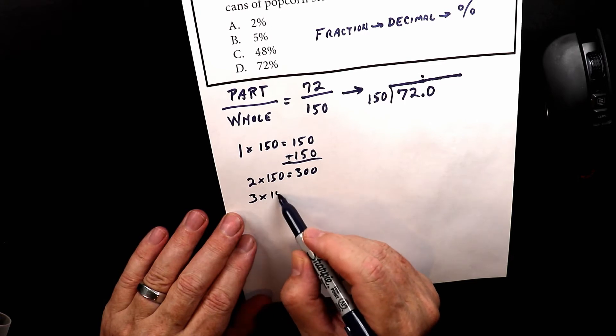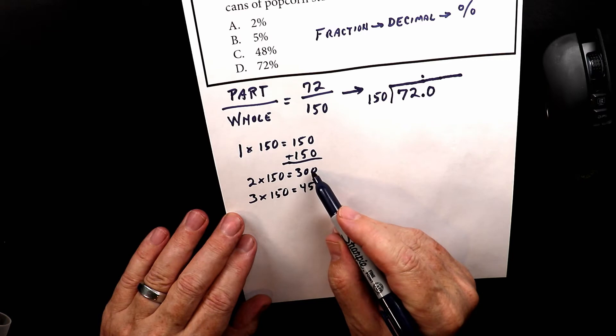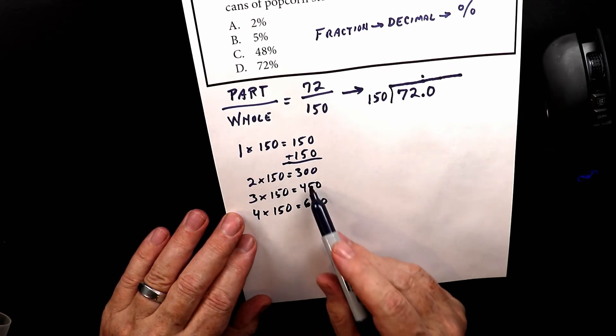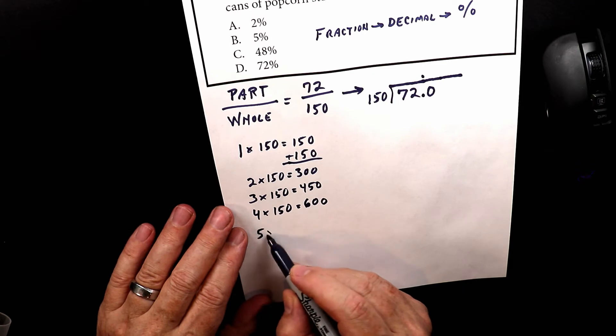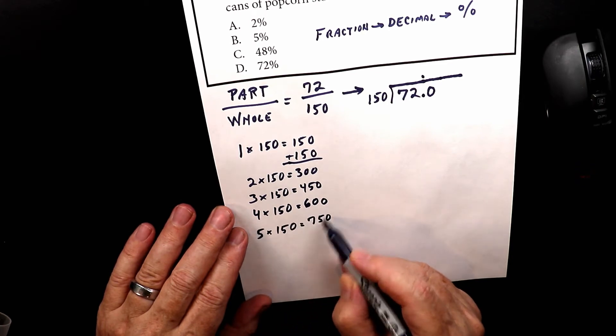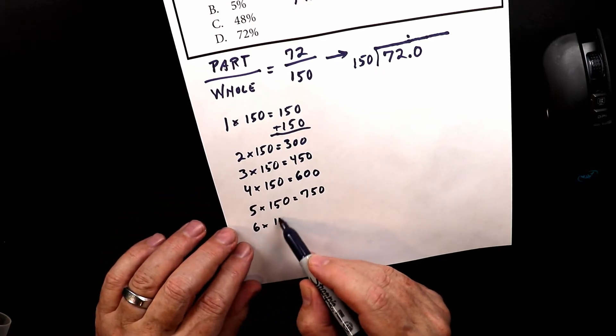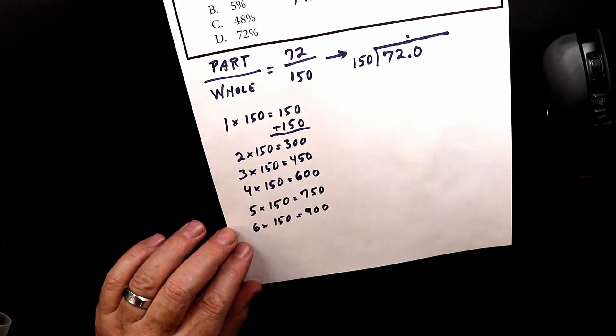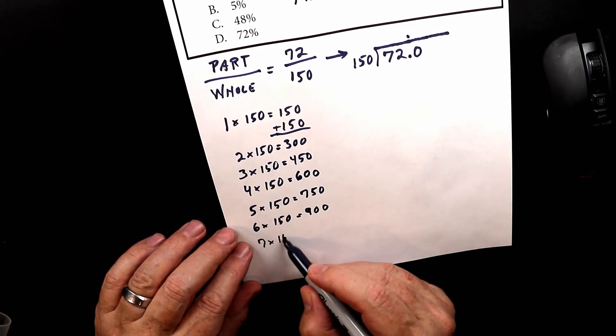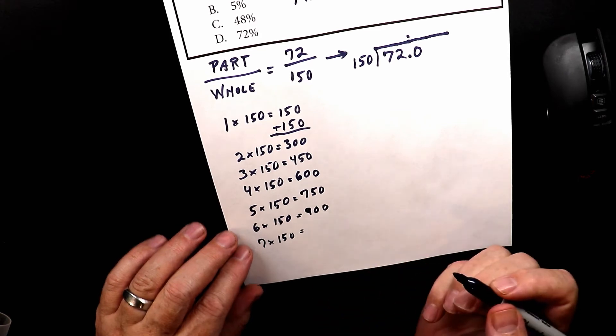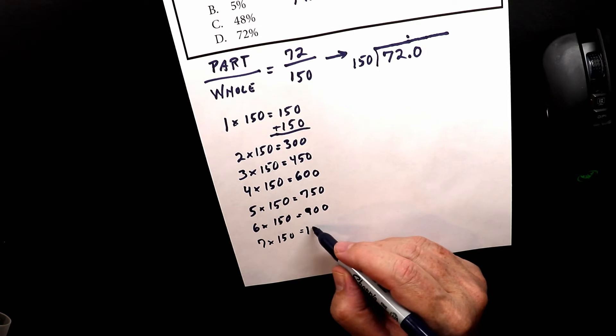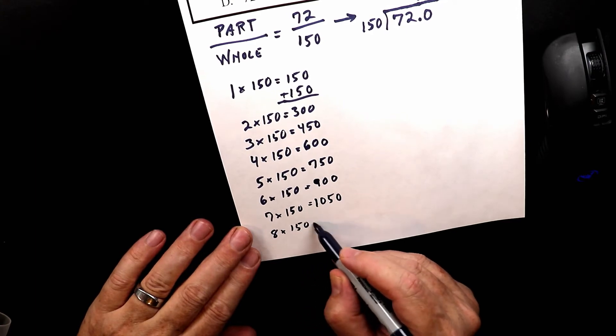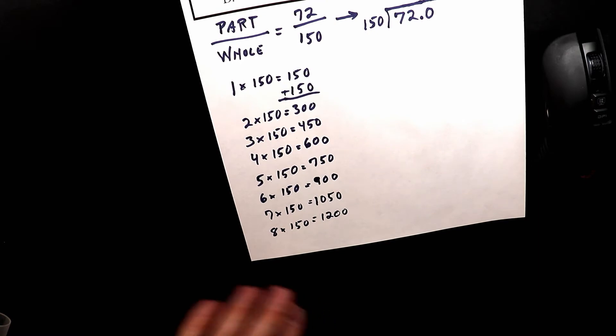So 3×150 equals 450 because I'm just adding 150 to that. 4×150 equals 600. 5×150 equals 750. 6×150 equals 900. 7×150 equals 1,050. And 8×150 equals 1,200. I'm going to stop there, so just so we have them.